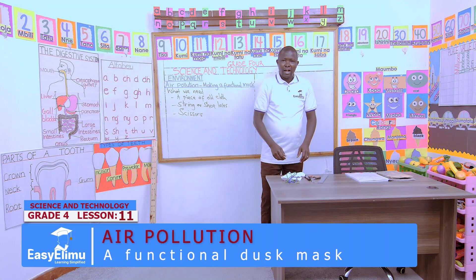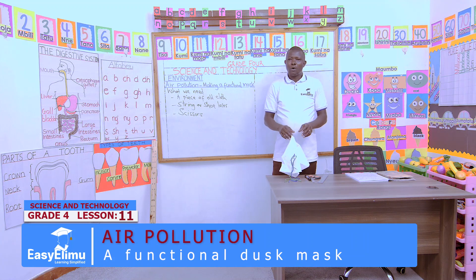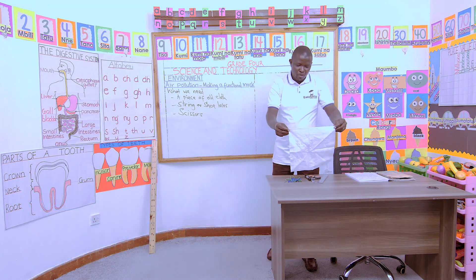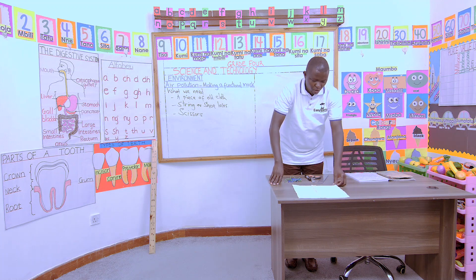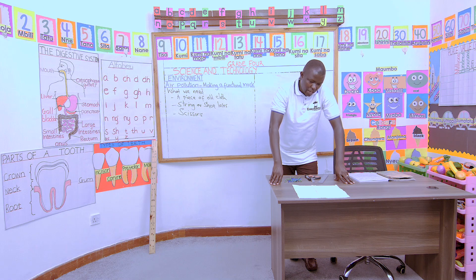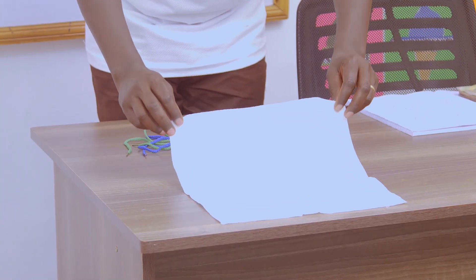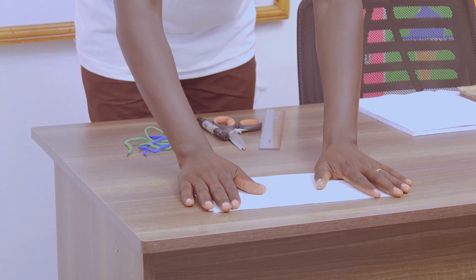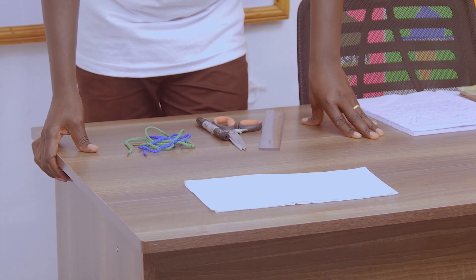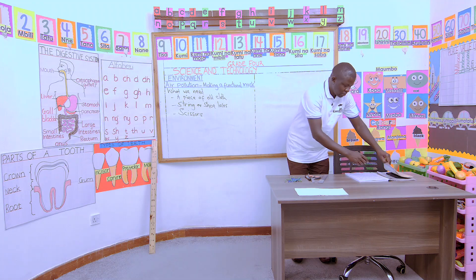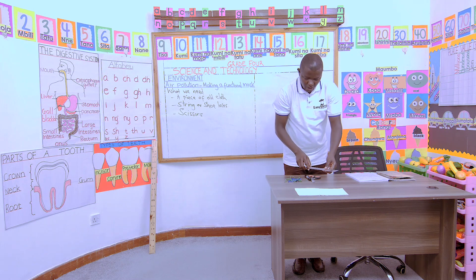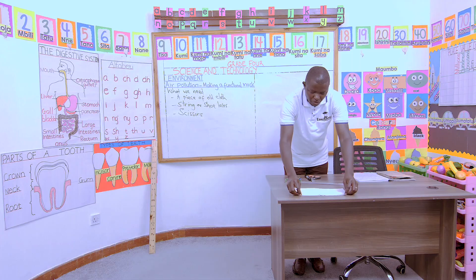How do we make a functional mask? On our piece of cloth — mine is almost rectangle or square shaped. So if you have a piece like mine, just fold it once. After you fold your piece once, take your ruler and your pencil or pen. At the point where you have joined the flaps, we have one folded side.